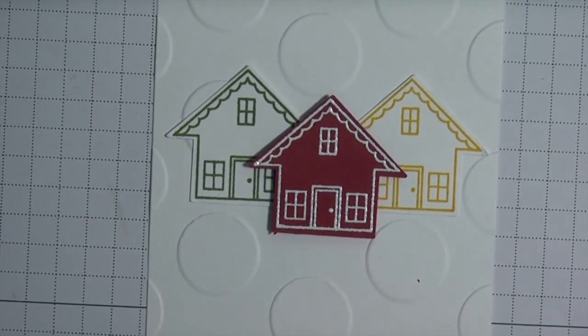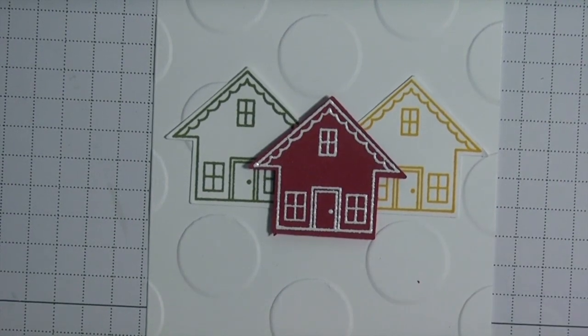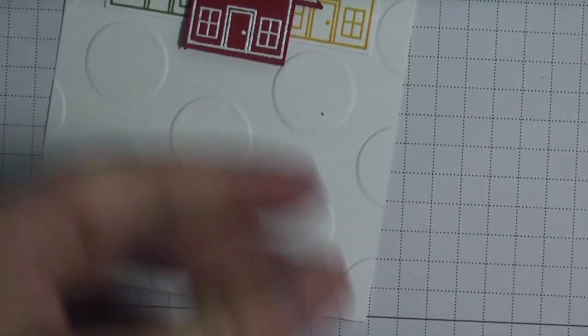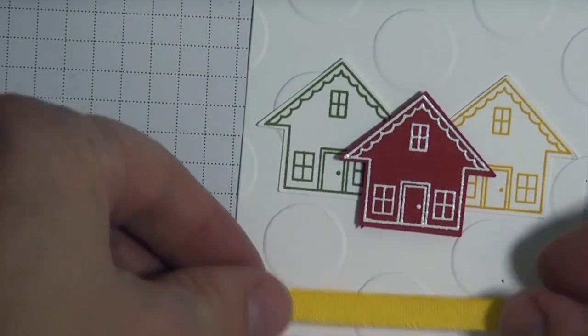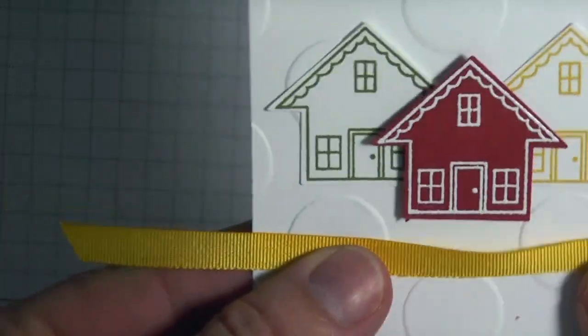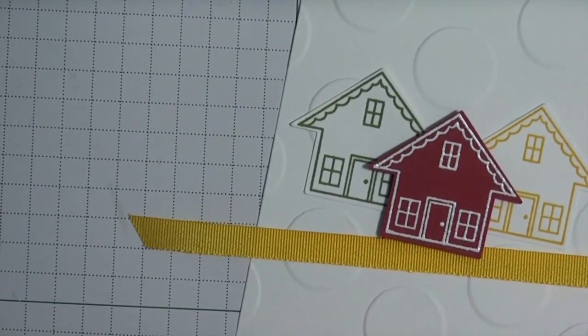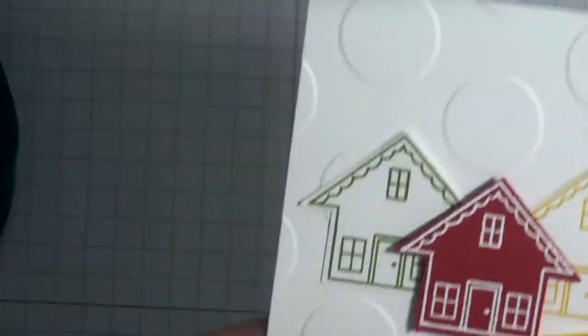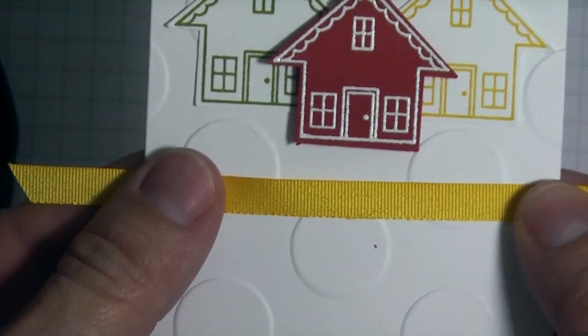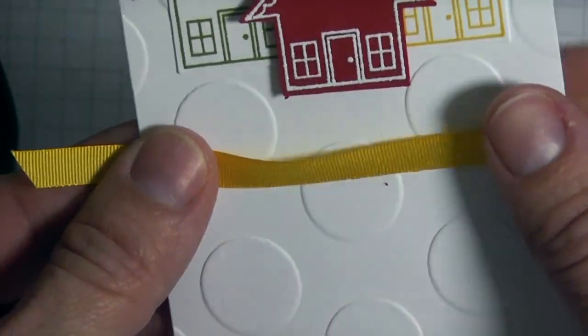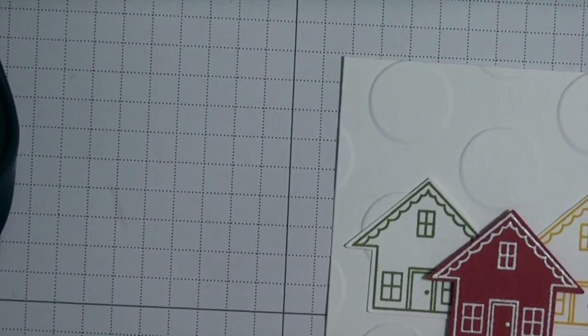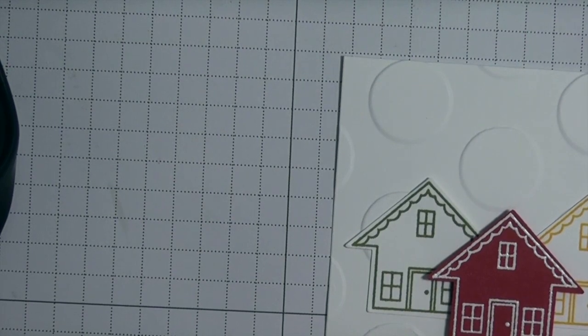I'm taking that ribbon from the Best Year Ever accessory pack, and I am just going to be wrapping it around the card front like so. I'm going to use some scotch tape and tape it on the back side.